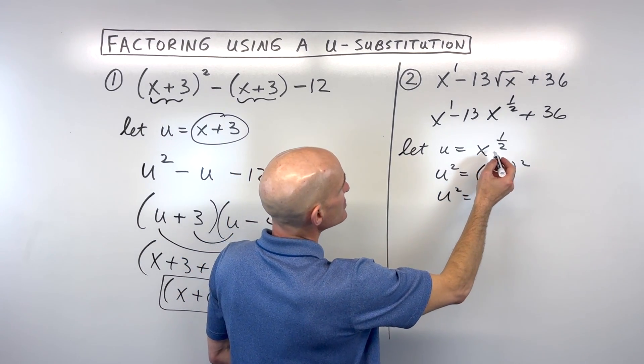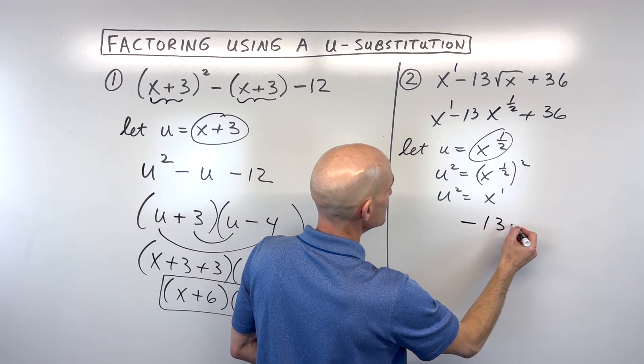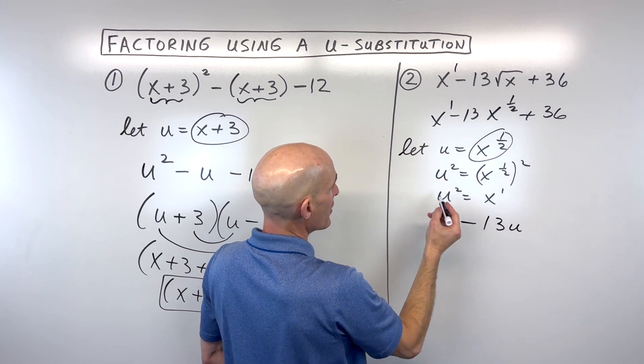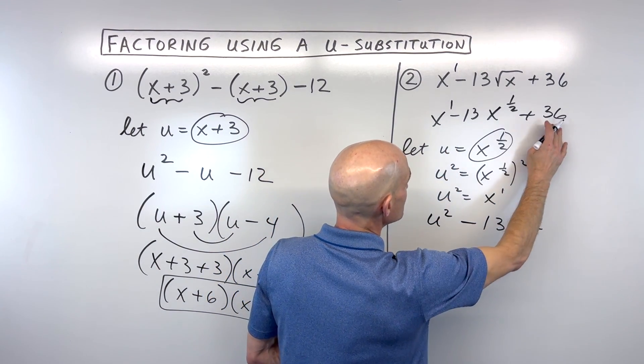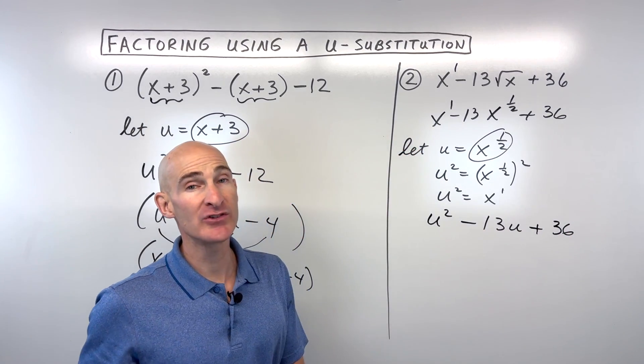So let's go ahead and make our substitutions now. You can see x to the one-half, that's here. So that's going to be minus 13u. x to the first, we said that's u squared, so we'll replace that with u squared, and then plus the 36. Now a lot simpler to look at and a little bit easier to factor.